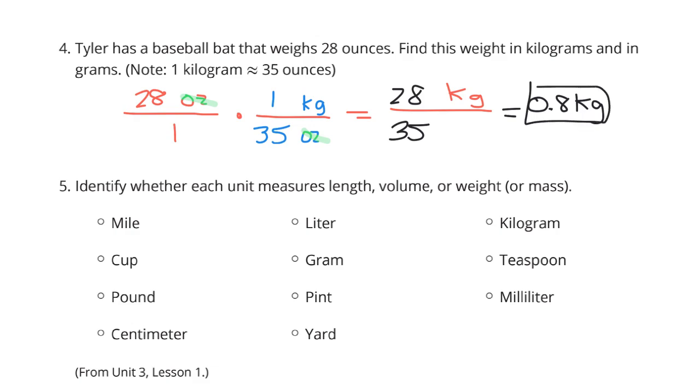Now, also know that 1,000 grams equals 1 kilogram. And so 8 tenths of a kilogram is going to equal 800 grams. And again, if you took 8 tenths times 1,000, you get the 800 grams.